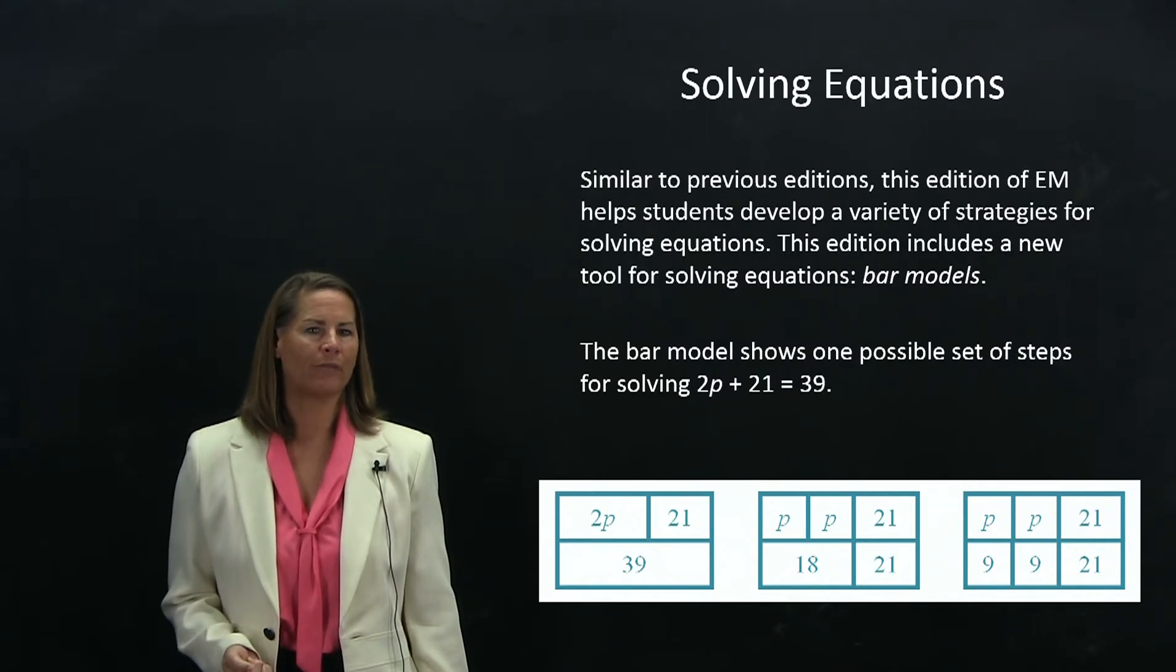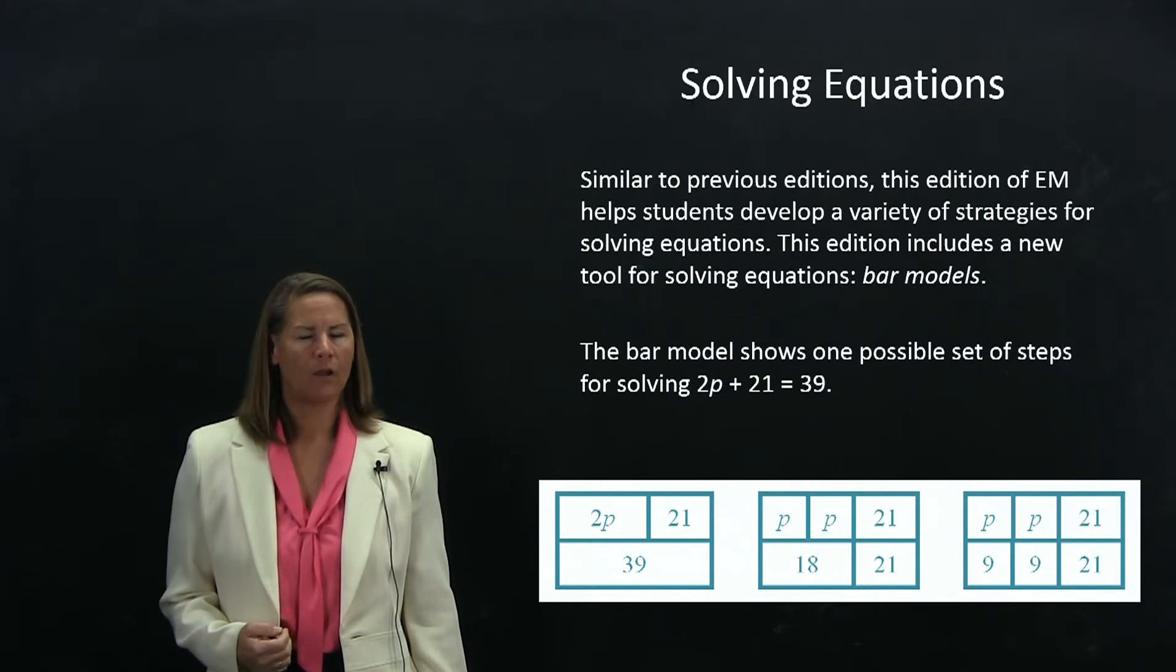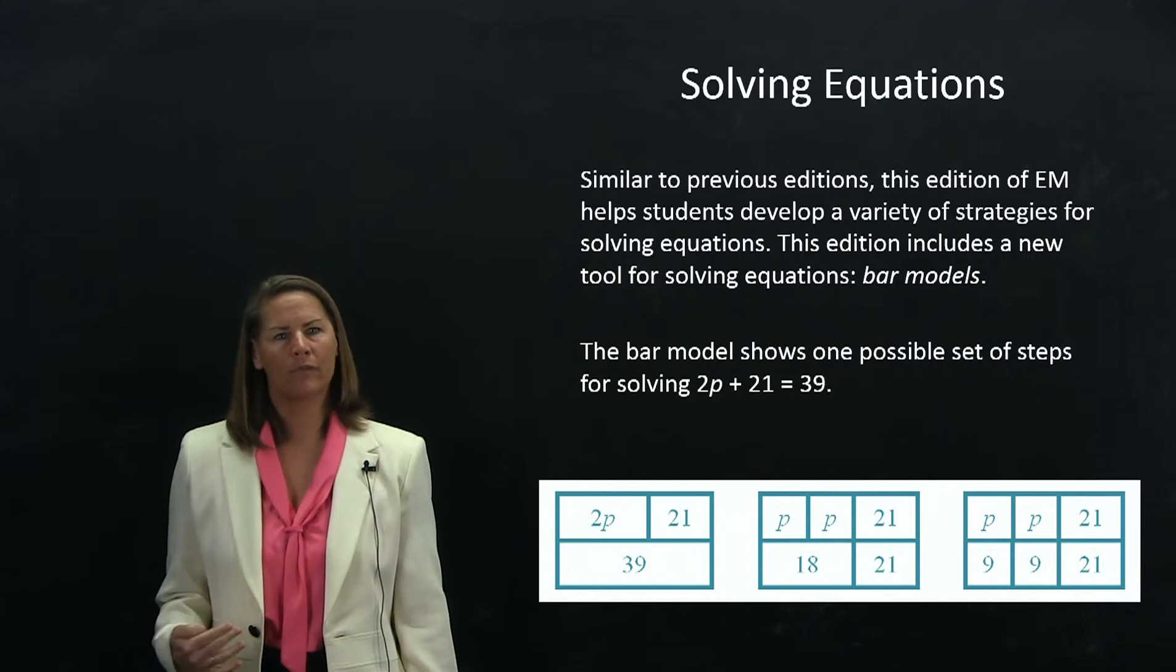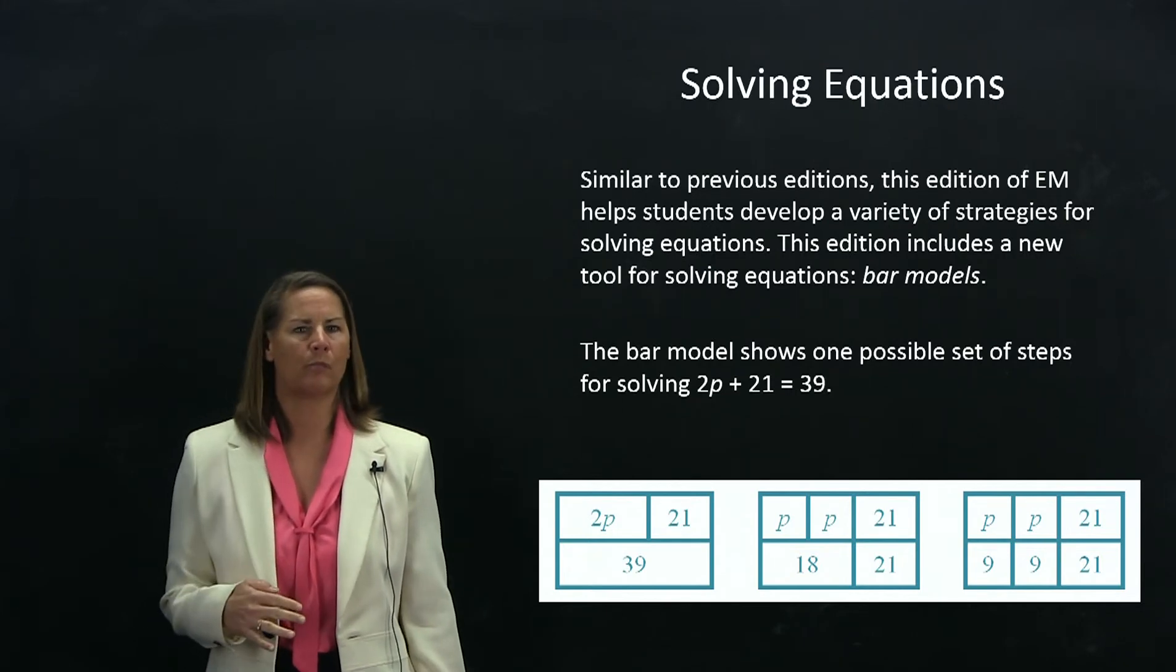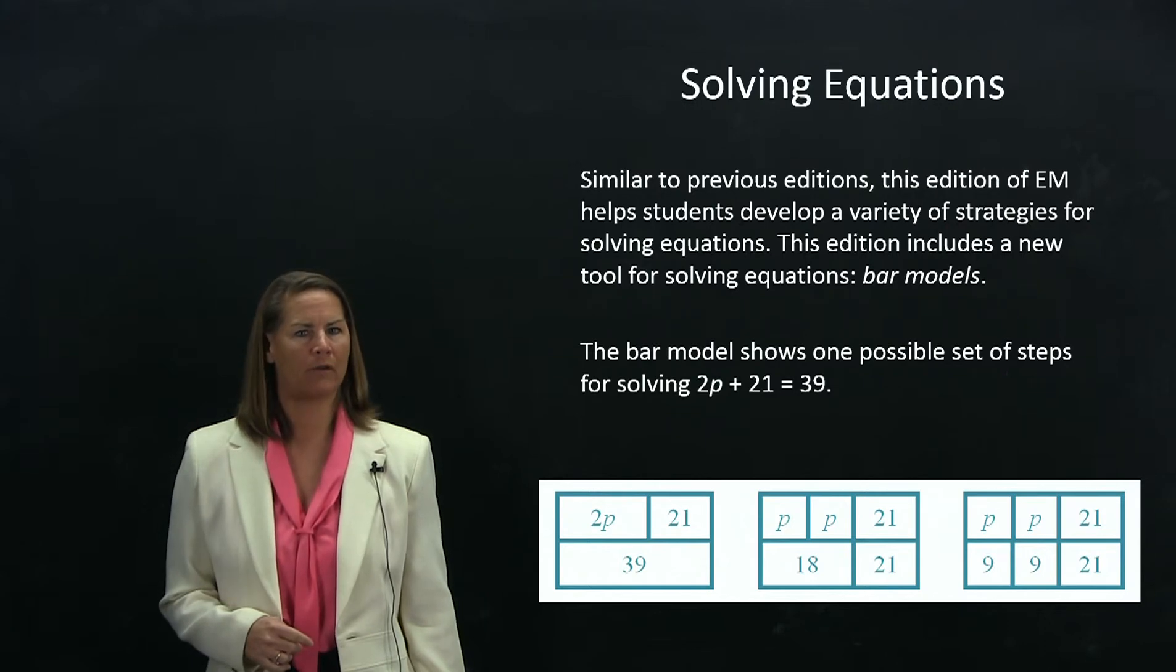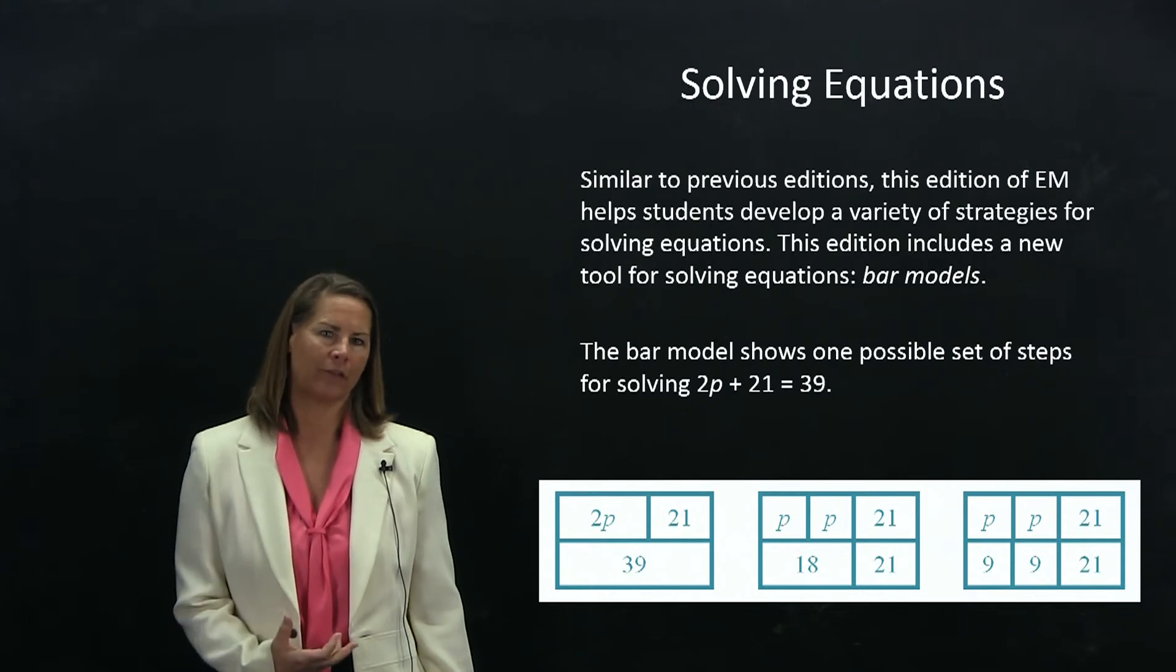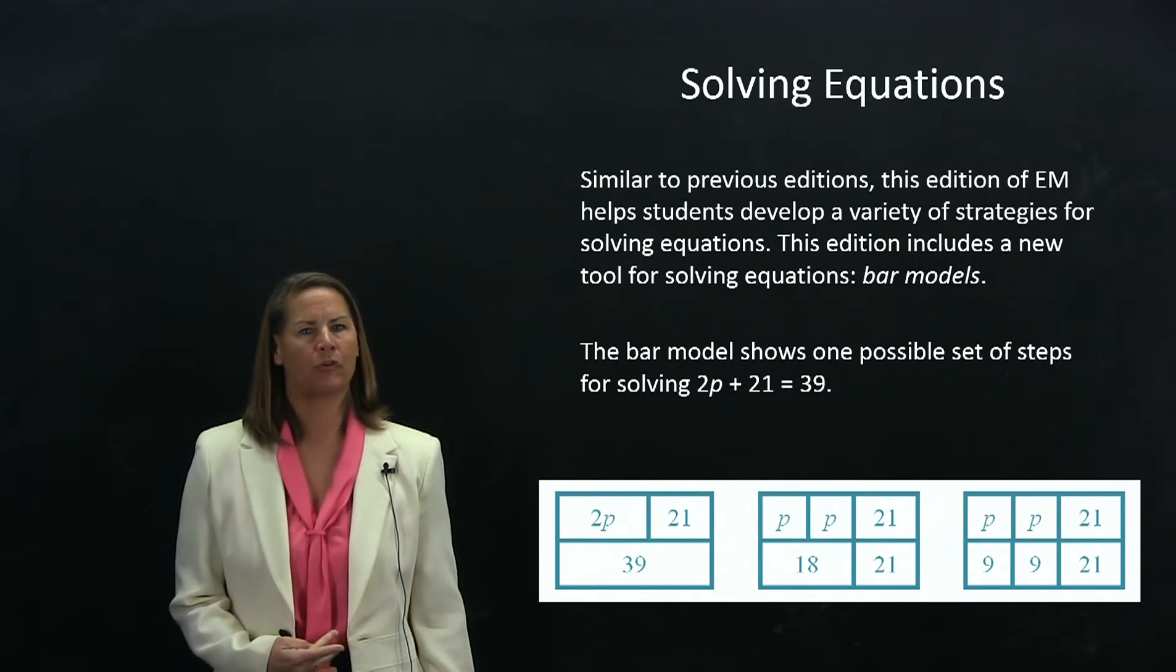The way the bar model works, you have an equation 2p plus 21 equals 39. We set up the bar model by putting one of the expressions on the top part of the model and the expression on the other side of the equal sign on the bottom part. Then we match up sections. For example, I have 21 in the top bar and 21 in the bottom bar. I can think about the bottom bar as divided into a section of 18 and a section of 21, and I've lined up the 21s.